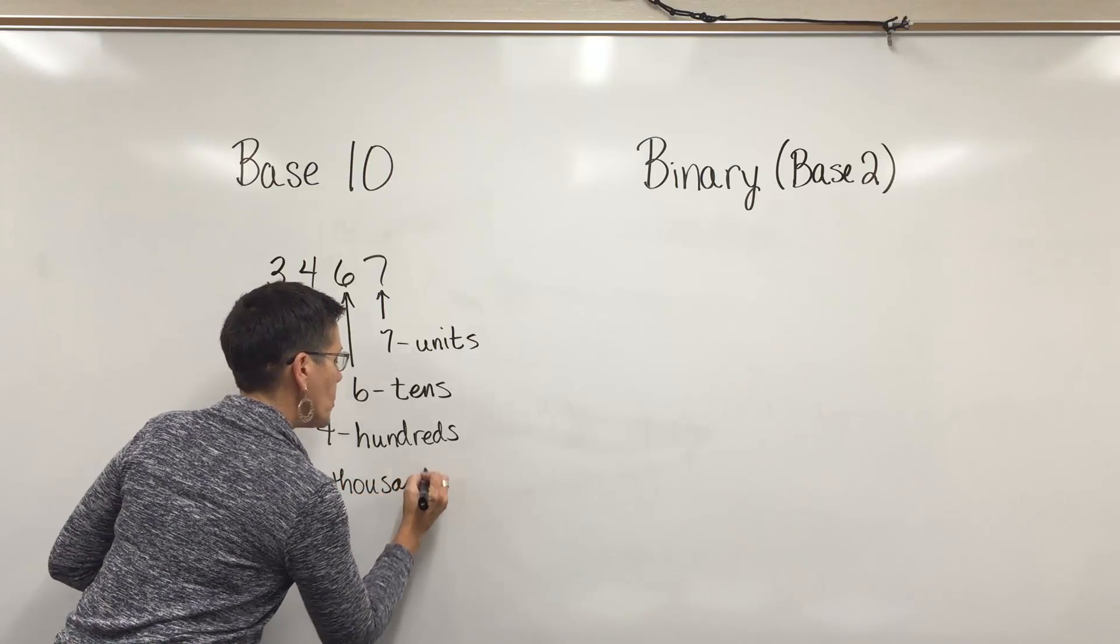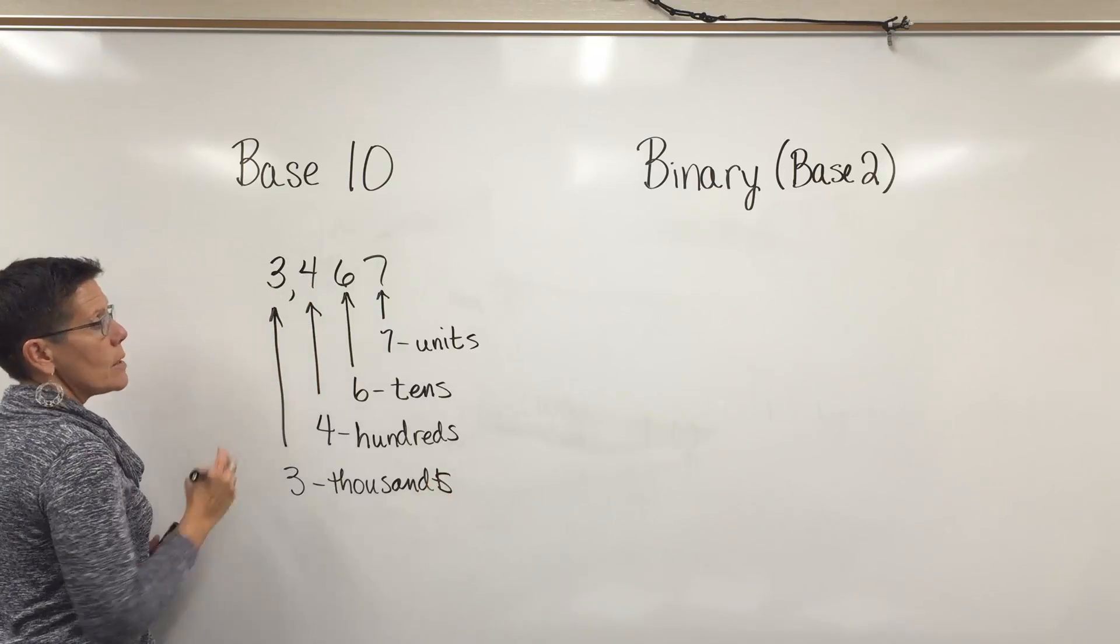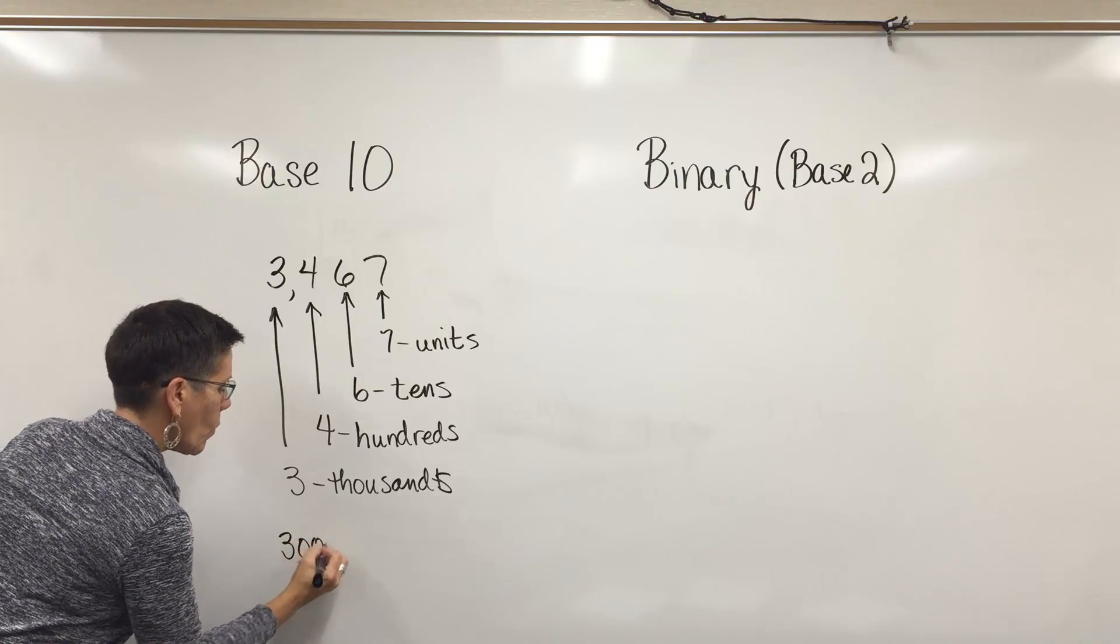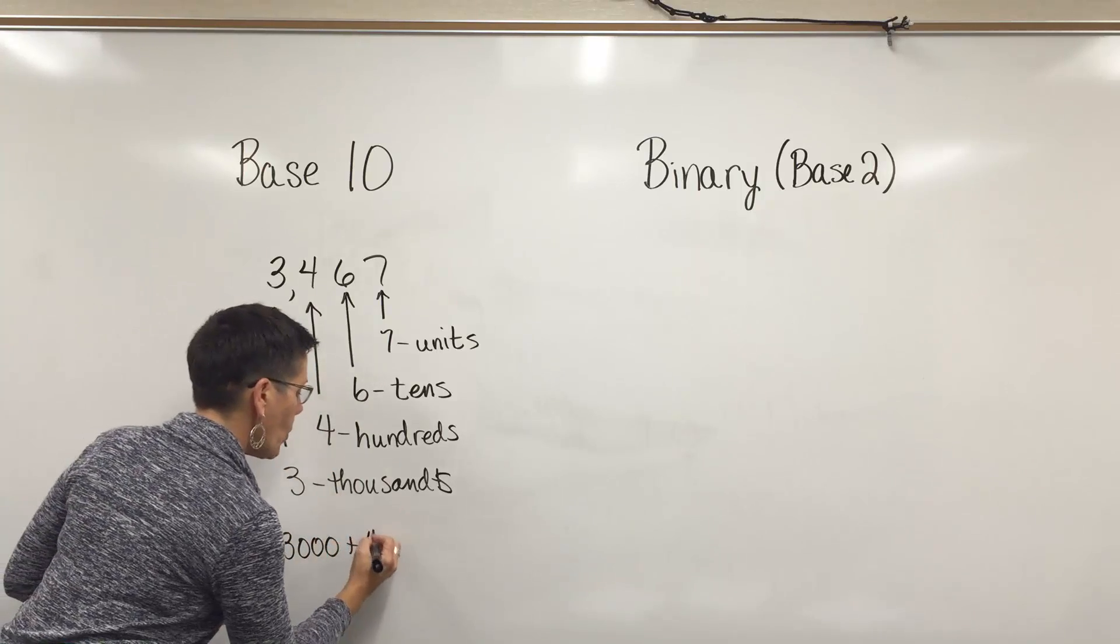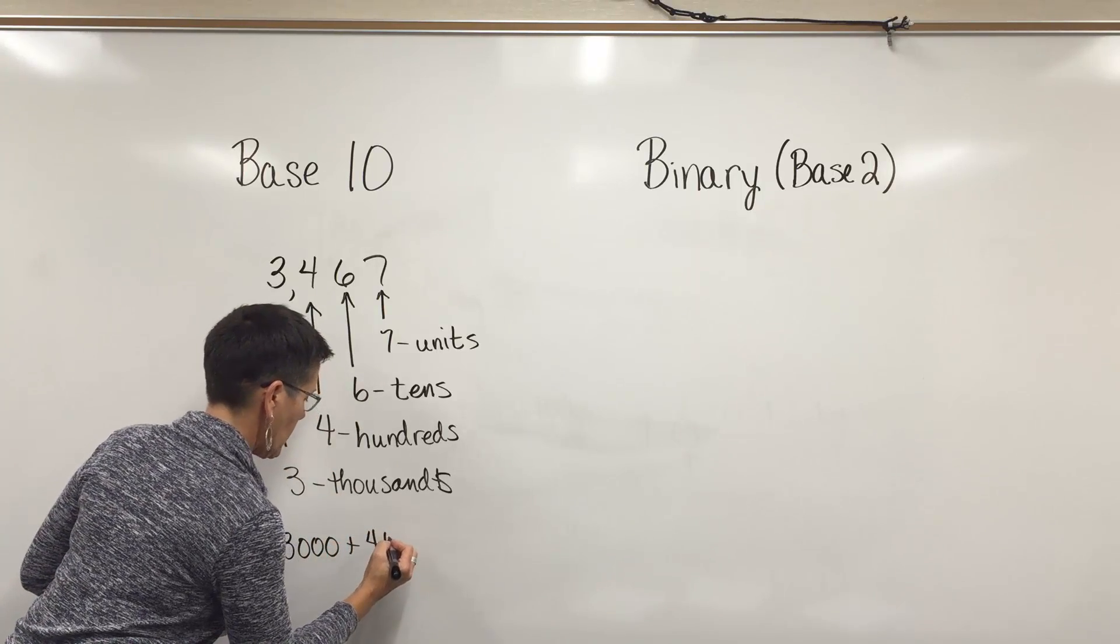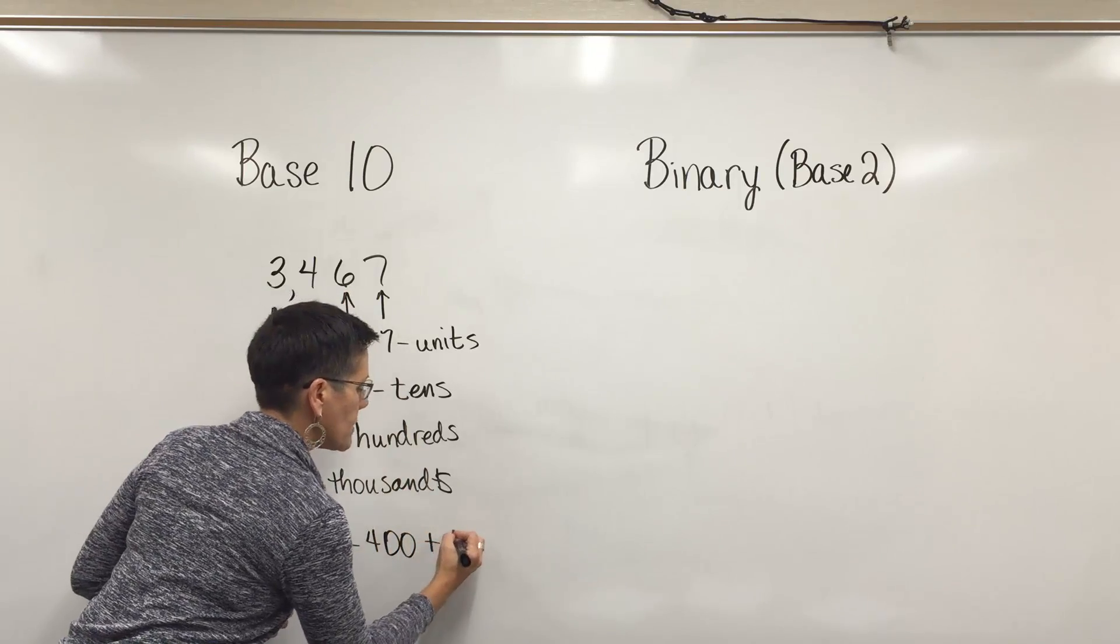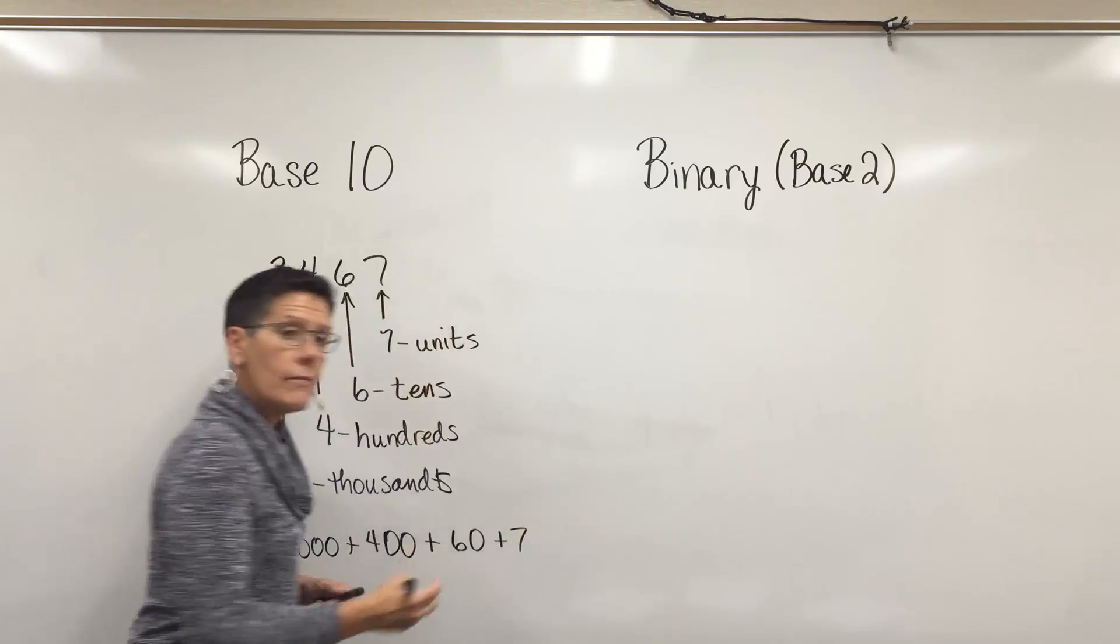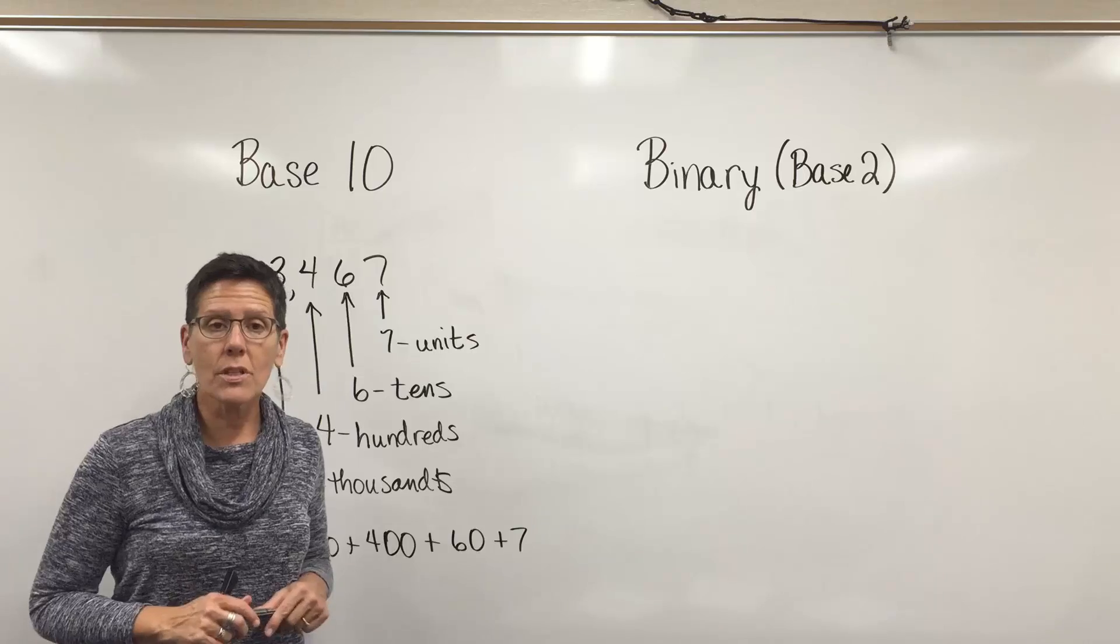If you wanted to break this number up into parts, this three would represent three thousands, the four would represent four hundreds, the six would represent six tens or 60, and the seven would be seven ones. You add that up and you get back what you started with.